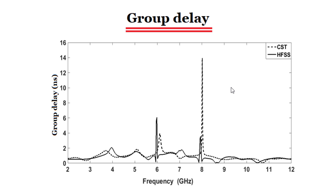In this video I will talk about an important parameter used in propagation and transmission signals. This parameter is group delay. A lot of people use it but do not know what it means. Group delay is an important factor which can give us an idea about the distortion or degradation of signals in propagation between input and output of any equipment.